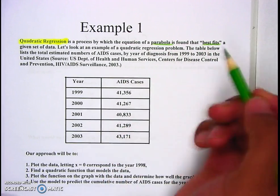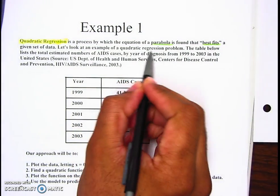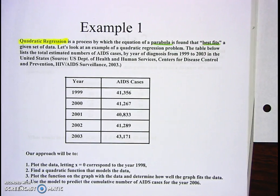Let's look at an example of a quadratic regression. The table below lists the total estimated number of AIDS cases by year of diagnosis from 1999 to 2003 in the United States. They give you the table here.